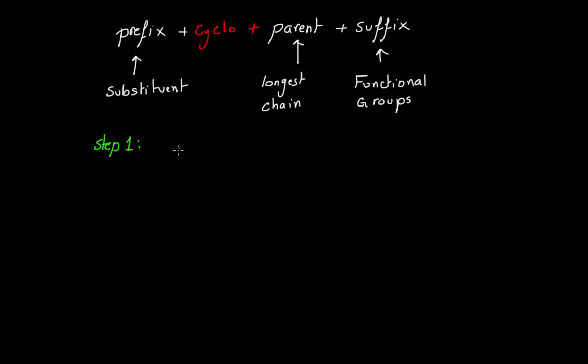Now step 1 in naming cycloalkanes starts with finding the longest chain or the parent cycloalkane. For example, if you have the following cycloalkane which is cyclohexane and substituted with a methyl here and an ethyl here, the parent cycloalkane would be the six-membered ring which is called the cyclohexane.